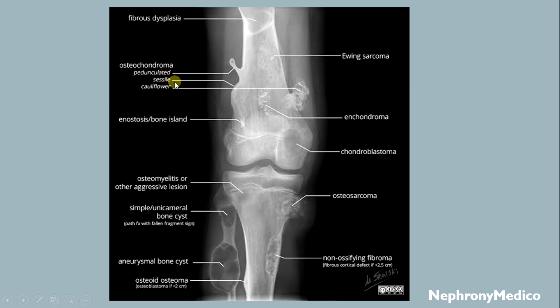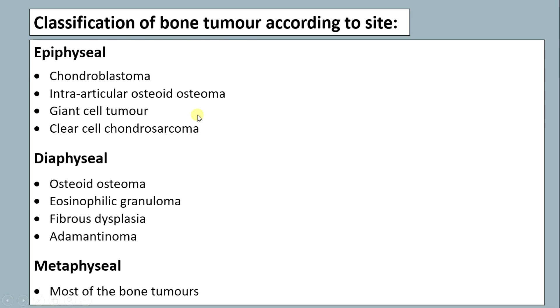Shown here are osteochondroma with pedunculated or sessile type, aneurysmal bone cyst, osteoid osteoma, and osteosarcoma. Classification of bone tumors according to site: epiphyseal, diaphyseal, and metaphyseal.